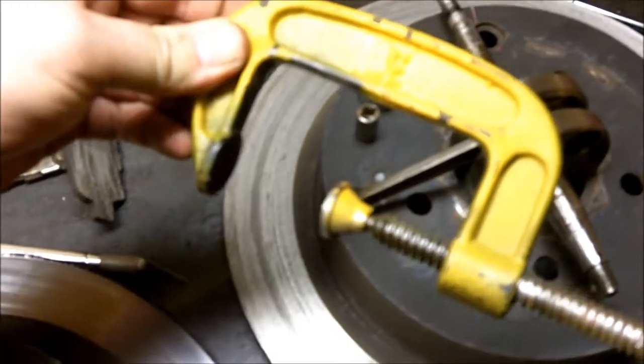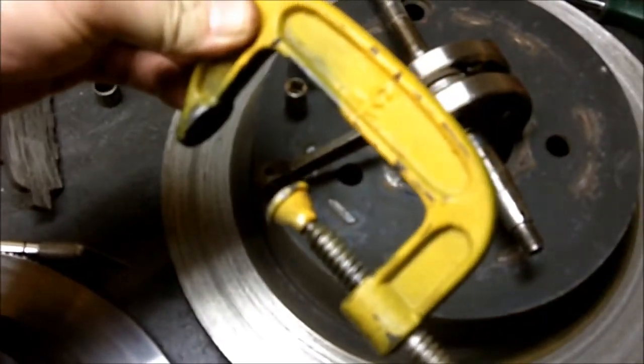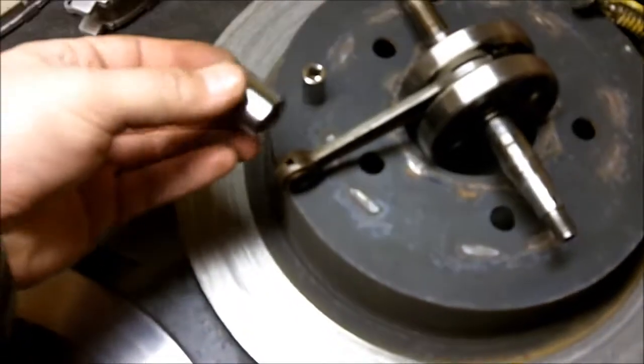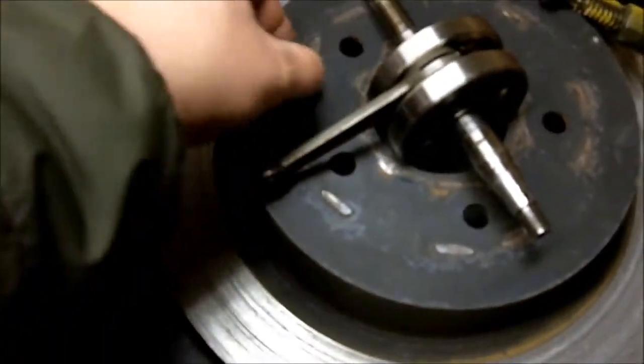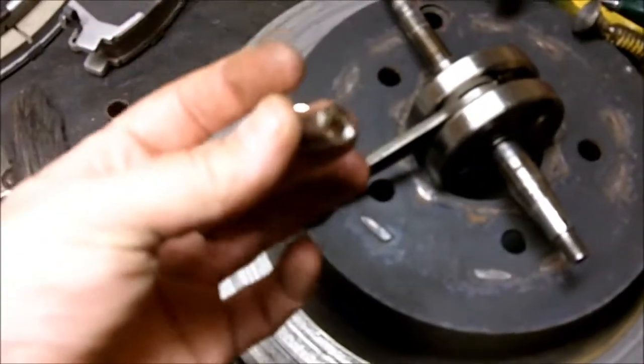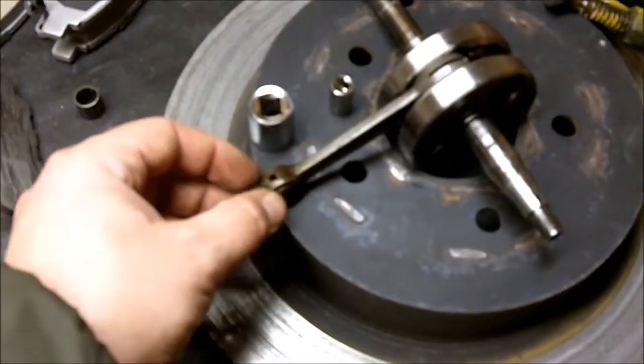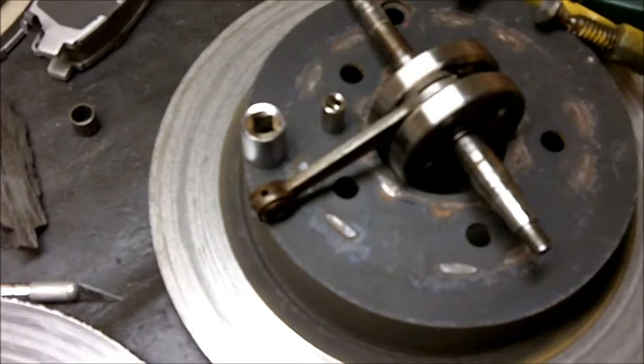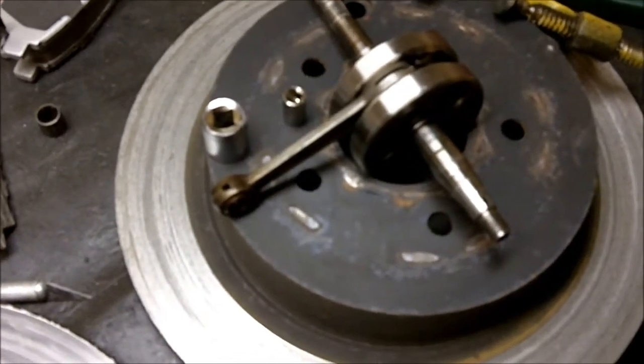And then I'm going to put the C-clamp around it and just crank it down and push it through. The reasoning behind using this and this, some people just use this little guy. I just want to put even pressure on the connecting rod so I'm not tweaking it and stuff like that. I'm going to quick do that and I'll show you the results.